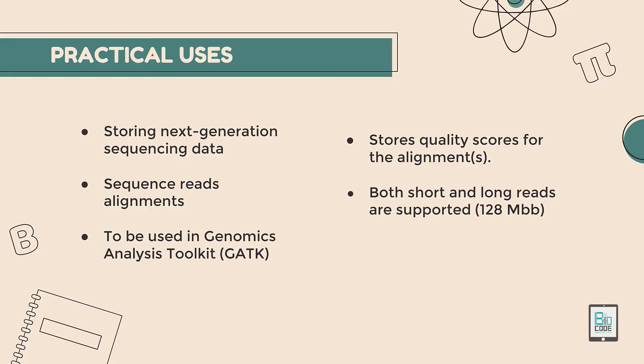The practical uses of SAM include storing next generation sequencing data and sequence read alignments. It is used in the Genomics Analysis Toolkit, which contains a plethora of tools for genomics analysis. It is also used for storing quality scores for the alignment, and it supports both short and long reads up to 128 Mbp — megabase pairs.